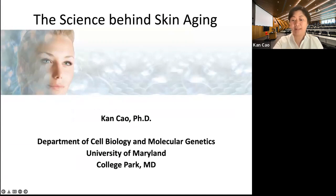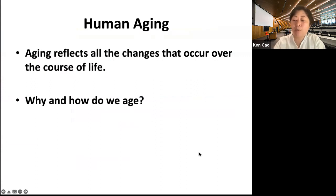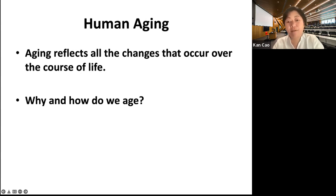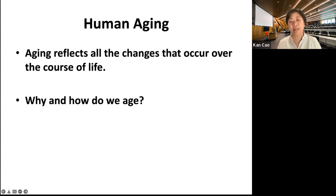My lab at the University of Maryland is interested in understanding human aging. What is human aging? Aging reflects all changes that occur over the course of our lifespan. According to the WHO, common conditions in older age include hearing loss, back and neck pain, and osteoarthritis. Skin aging is among the most visible part of our aging process, and our skin is the largest organ of our body.